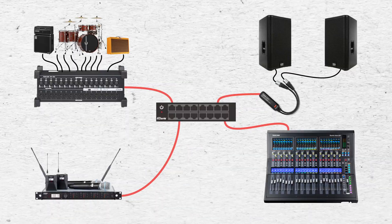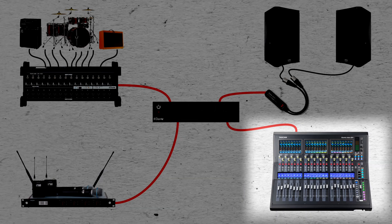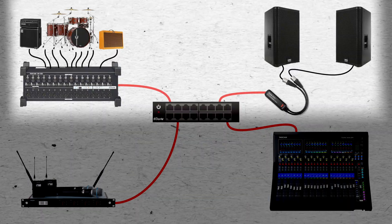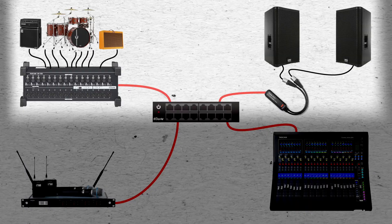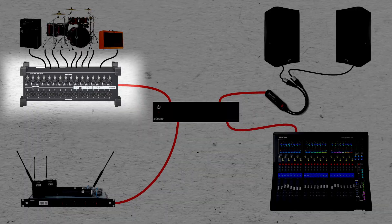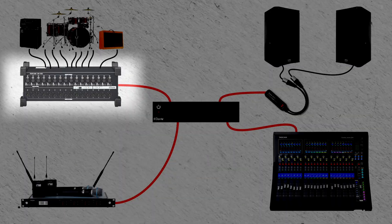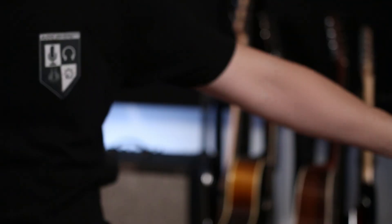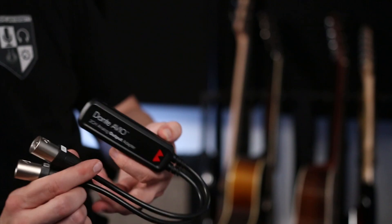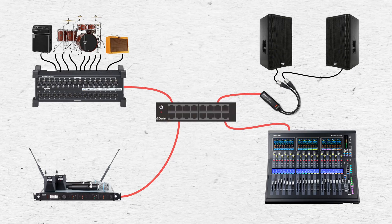Let's say we have some inputs on stage, a pair of powered speakers, and a mixer. The mixer has Dante built in, so we can connect it directly to the network switch. Meanwhile, the inputs on stage and the powered speakers only have analog audio connections. So to connect the microphones to the network, we can use a stage box with Dante connections. And to connect the powered speakers to the network, we can use one of these Dante AVO analog output adapters. The analog audio inputs and outputs connect to the Dante devices with XLR cables, and the Dante devices connect to the network switch.